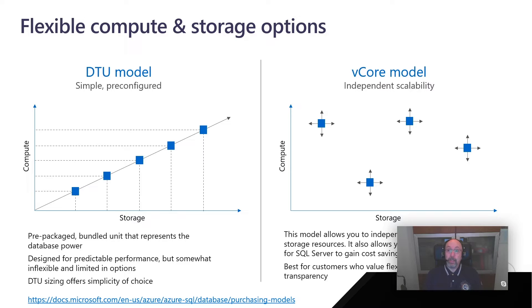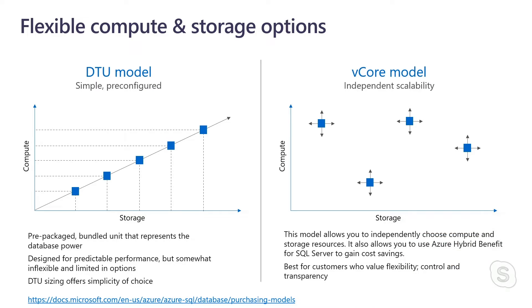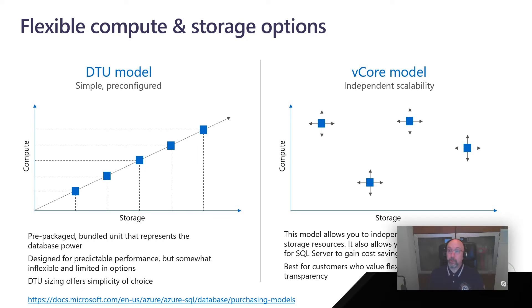By letting you specify things like the amount of vCores you want to deploy, it also enables new economic models like the ability to reuse existing licenses through the Azure Hybrid Benefit. So if you already have licensed cores on-prem, you can reuse those licenses in Azure SQL Database and significantly reduce the cost of running your workload in Azure. The main difference: DTU is very simple, focused on workload and traffic. The vCore model targets existing workloads that you are moving into Azure.